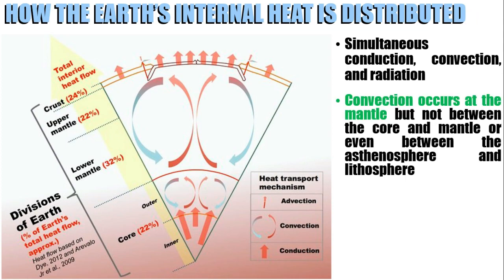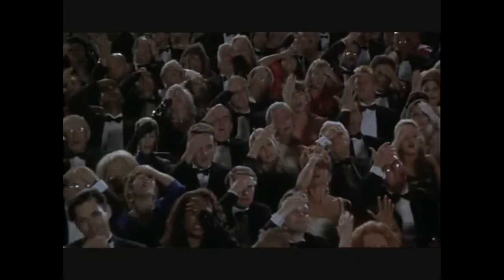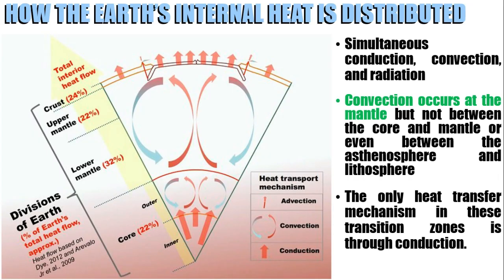Convection occurs at the mantle, but not between the core and the mantle, or even between the asthenosphere and lithosphere. Take note that the only heat transfer mechanism in these transition zones is through conduction.